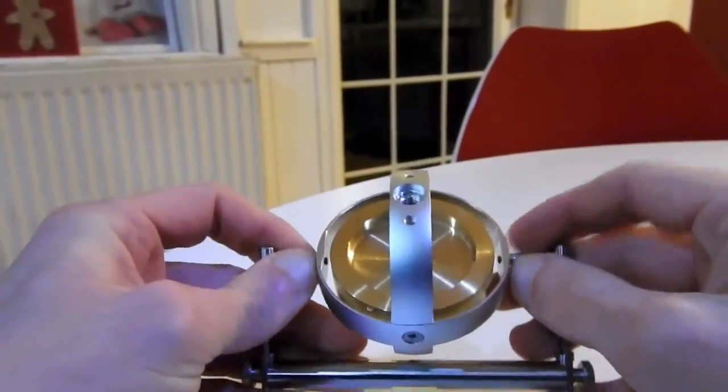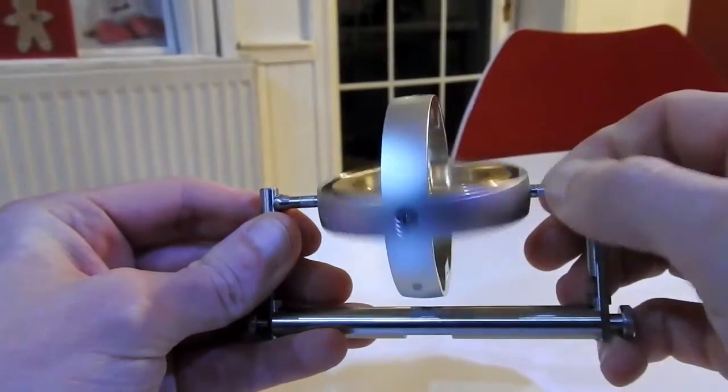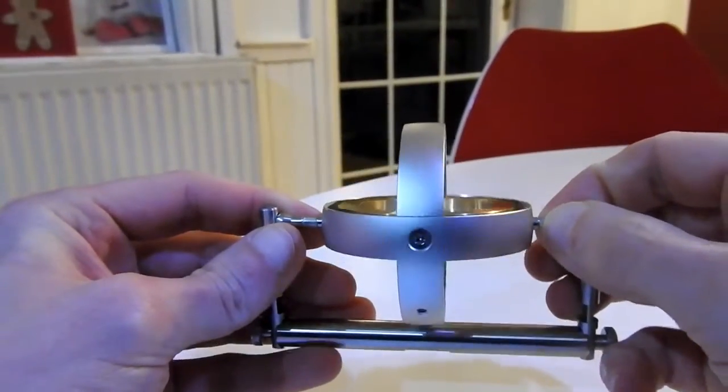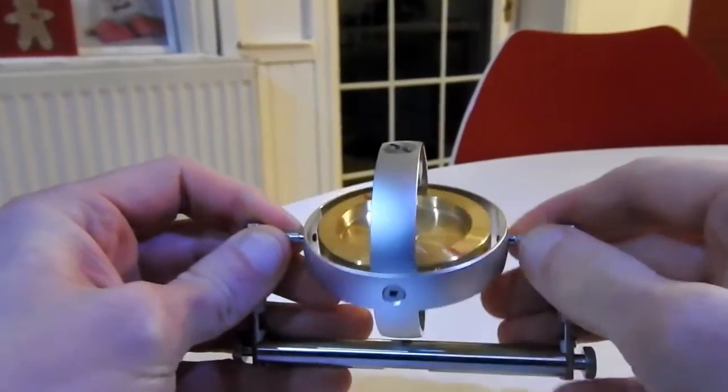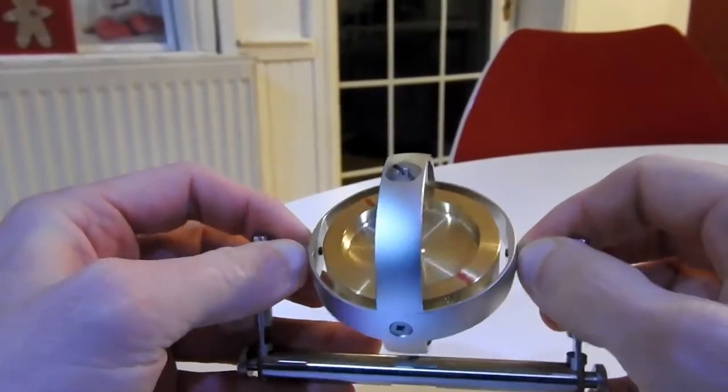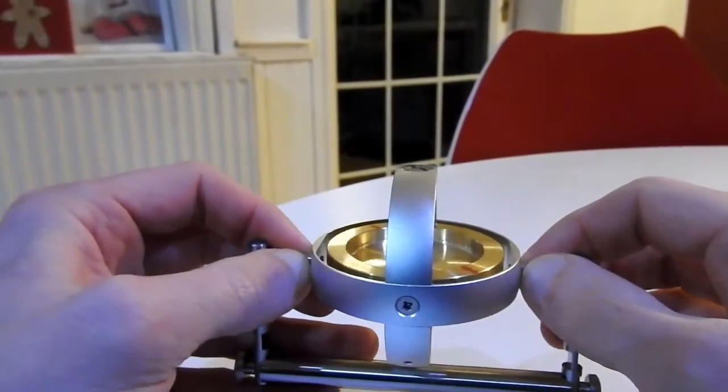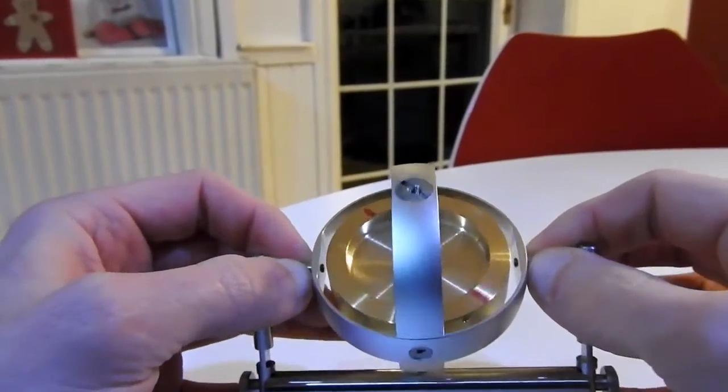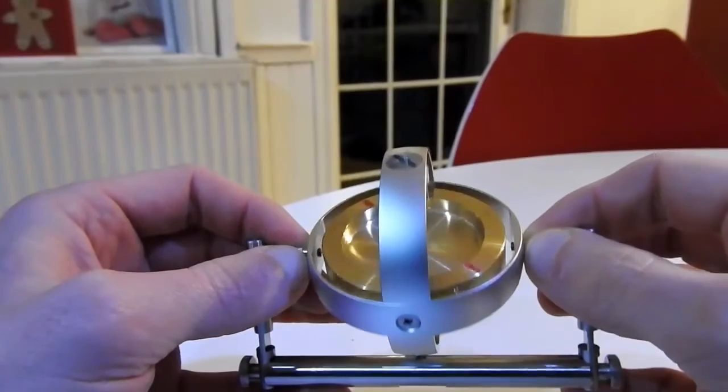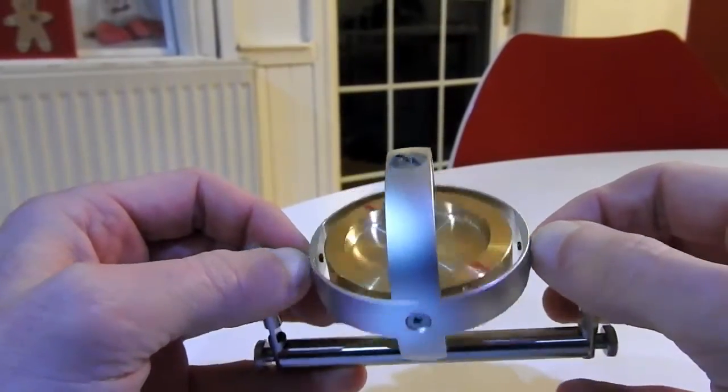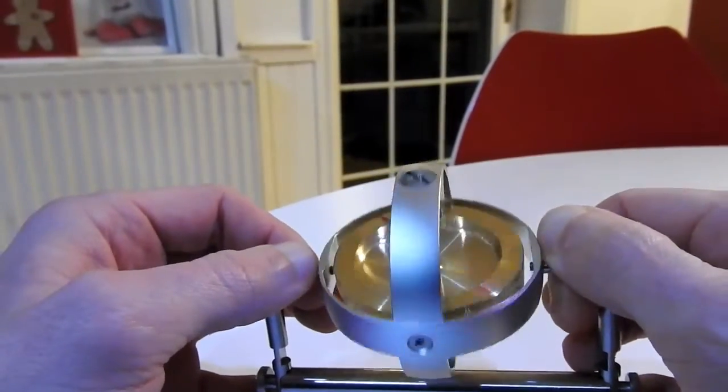And what of the artificial horizon? That's a gyro as well. Why doesn't that need resetting every 15 minutes? Surely that would be subject to the exact same drift as the directional gyro. But it's actually considered bad practice to realign your artificial horizon during flight because you don't know whether you're aligning it to a straight and level orientation. So why does the directional gyro drift that the artificial horizon gyro doesn't?